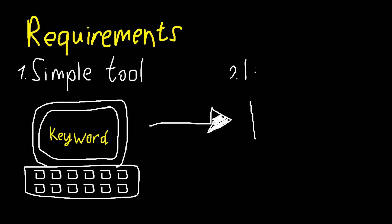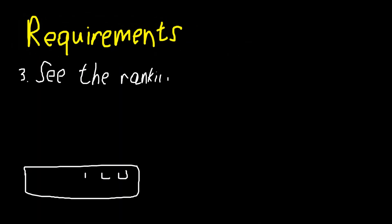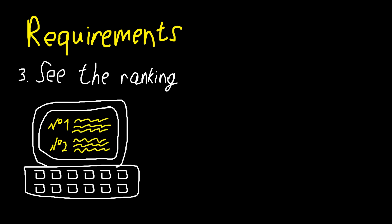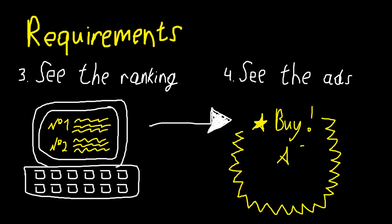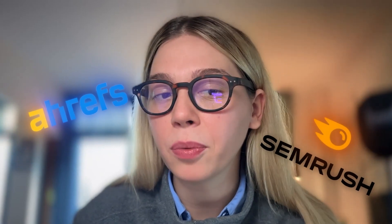So Sandra, what are we building today? I want a simple tool where I type a keyword, pick a competitor, and instantly see where they rank on Google — plus if they are running ads for that keyword. There are tools like Ahrefs and SEMrush, but the problem is they're expensive. Most start at $50 to $100 and can't be customized for a specific use case. Let's start.